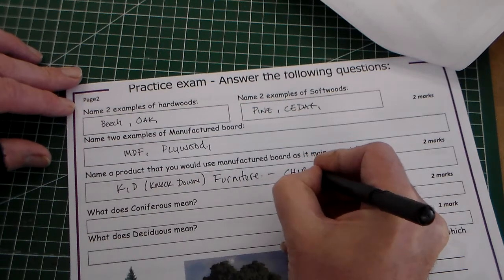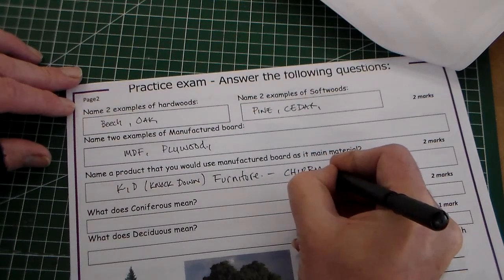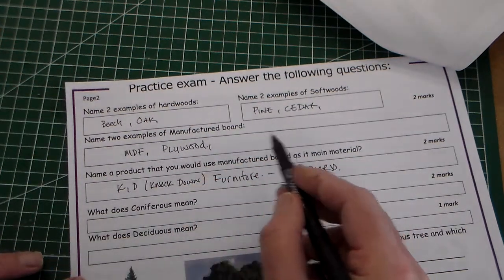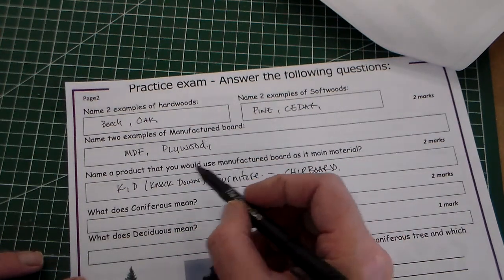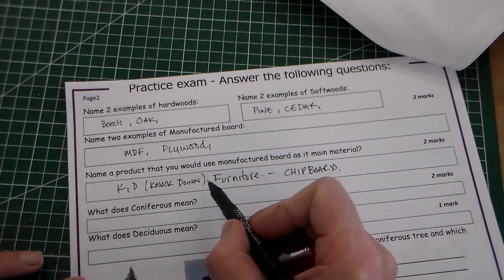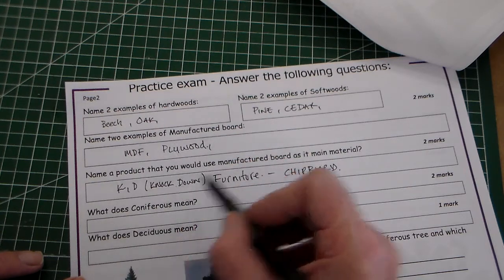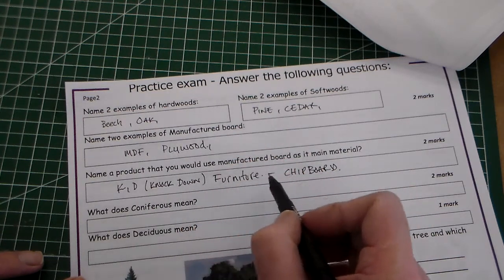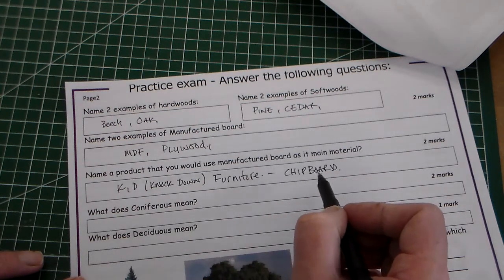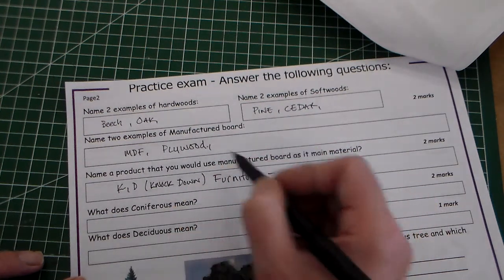It doesn't actually say use a different one in question one, but you could look out for that. Sometimes they might say name two examples of manufactured board, they might say name a use of one of these, or they might say name a manufactured board that you haven't used previously. But in that case it doesn't matter.